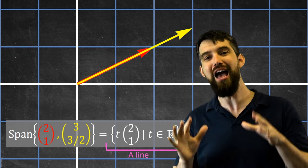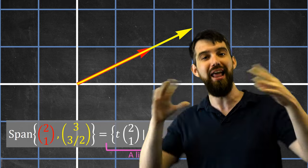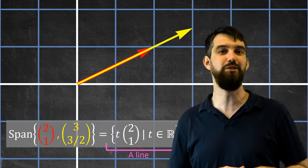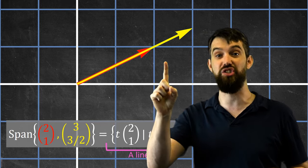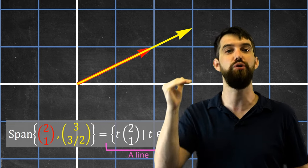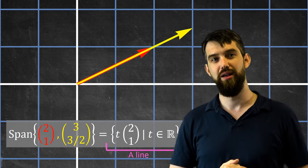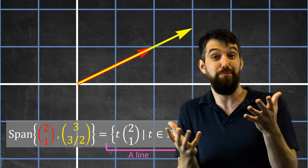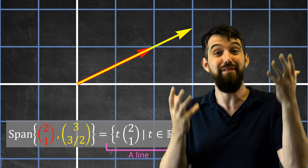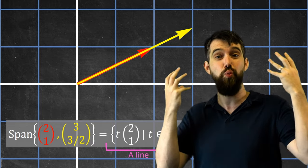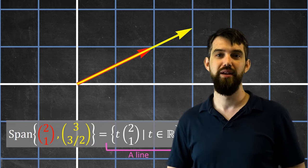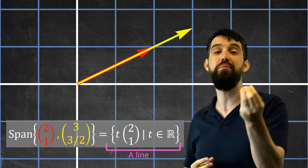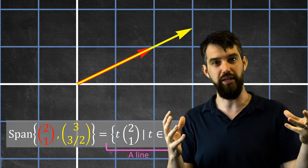So we have a span that doesn't cover everything. And even more pedantically, the span of the zero vector (0,0) — no matter what scalar I multiply it by — we just stay at the origin. So the span of the zero vector is just one thing: just the zero vector itself. The span could be everything, a line, or just a single vector — there are lots of different possibilities.